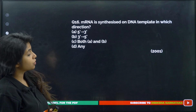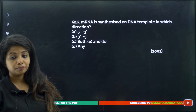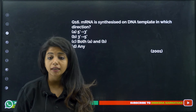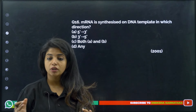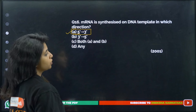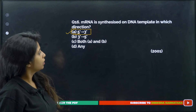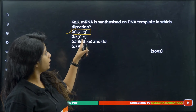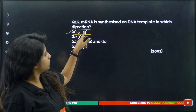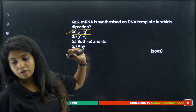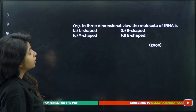mRNA is synthesized on the DNA template in the 5' to 3' direction. This is because RNA polymerase works only in the 5' to 3' direction. So the answer is 5' to 3'.